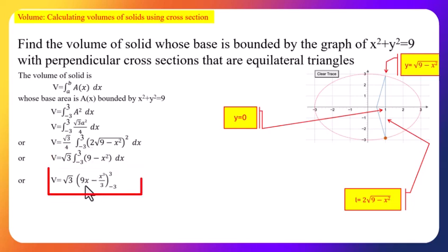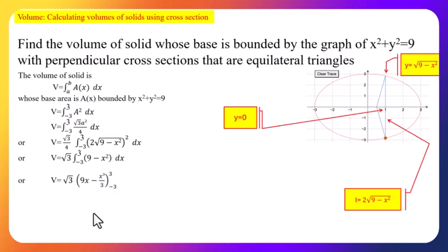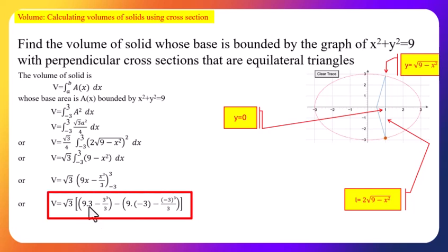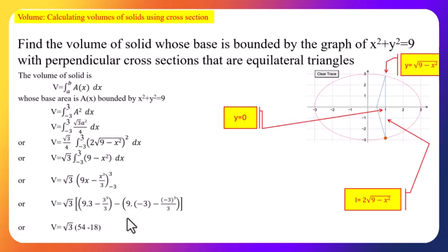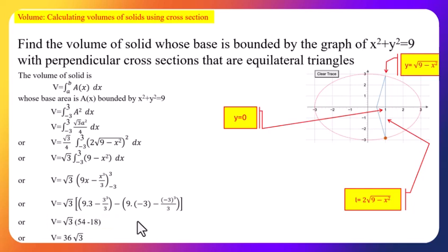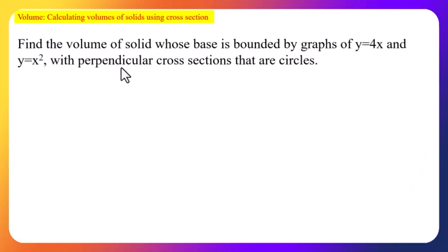The integration of 9 is 9x and the integration of x² is x³/3, evaluated from −3 to 3. Substituting x = 3 and subtracting the result for x = −3, after calculation the volume of the solid is 36√3 cubic units.